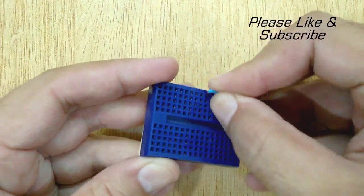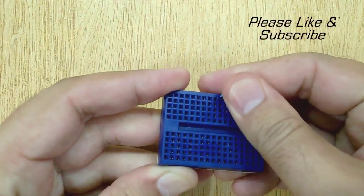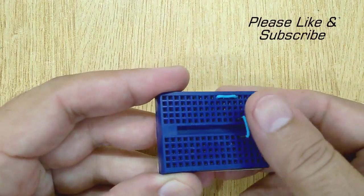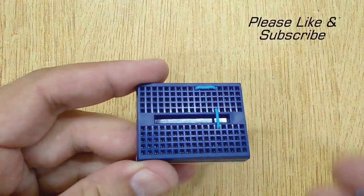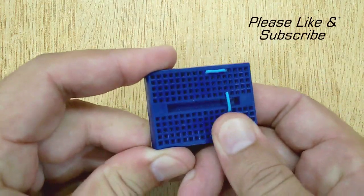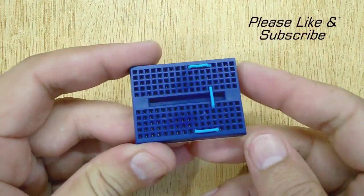Let's start making the circuit. Fix all the jumper wires, LED, and 100 ohm resistors in the breadboard as I am doing in this video. And if you need the circuit diagram of this circuit, I have given it at the end of this video.